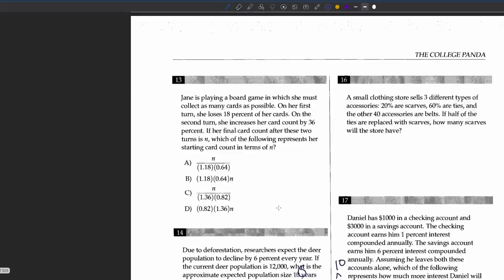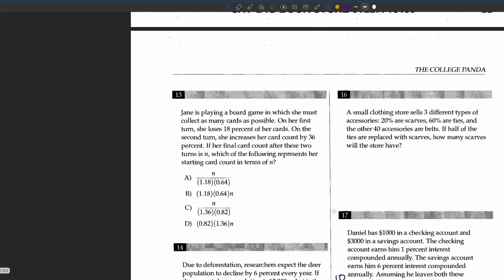Question 16: A small clothing store sells three different types of accessories. 20 percent are scarves, 60 percent are ties, and the other 40 accessories are belts. If half of the ties are replaced with scarves, how many scarves would the store have? Since scarves and ties make up 80 percent, the 40 belts must be 20 percent. So 20 percent of x equals 40, thus x is 200.